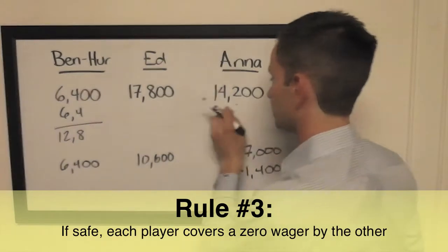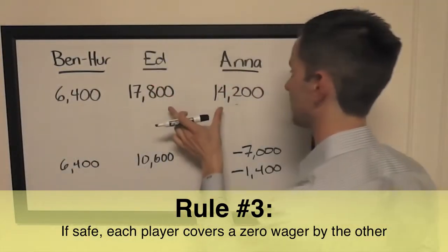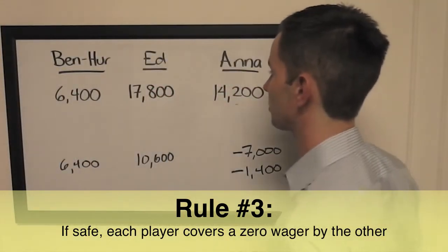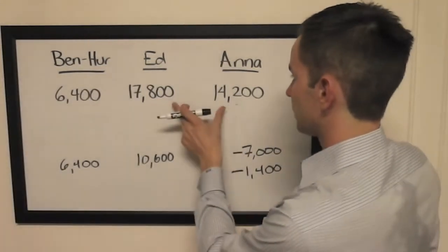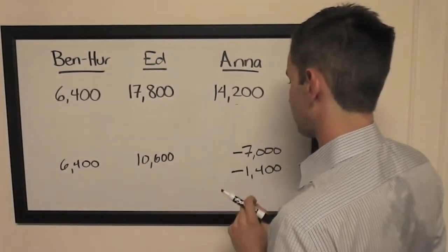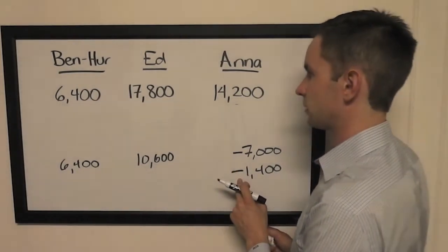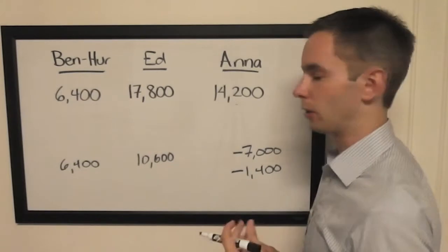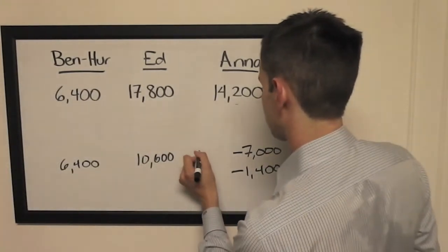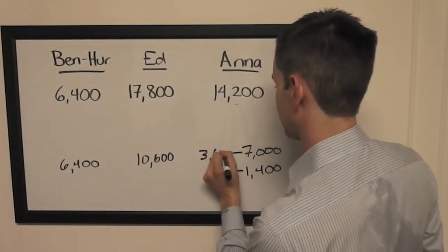Now we look at rule number three. If Anna wants to cover a zero wager by Ed, their difference is 3,600. And that is going to be more than Anna needs to wager to stay above a double up by third. So it's not quite a short conjecture situation. She does have a bit of a predicament here.